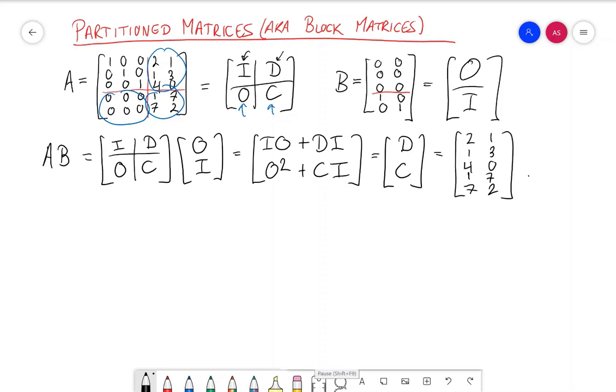That was a lot easier than multiplying out entirely straight from the definition, a five by five matrix A and the five by two matrix B.